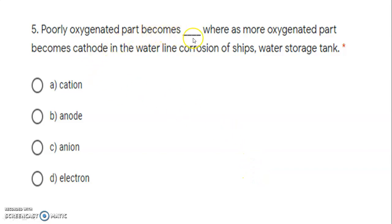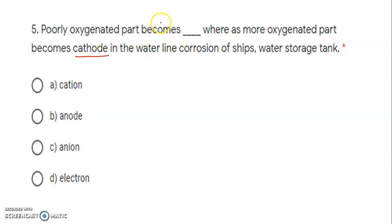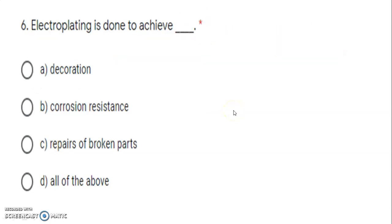Next: poorly oxygenated part becomes dash, whereas more oxygenated part becomes cathode in the waterline corrosion of a water storage tank. Read carefully — more oxygenated part becomes cathode, so the poorly oxygenated part becomes the remaining electrode, which is the anode. Poorly oxygenated part always acts as anode. Correct option is B.